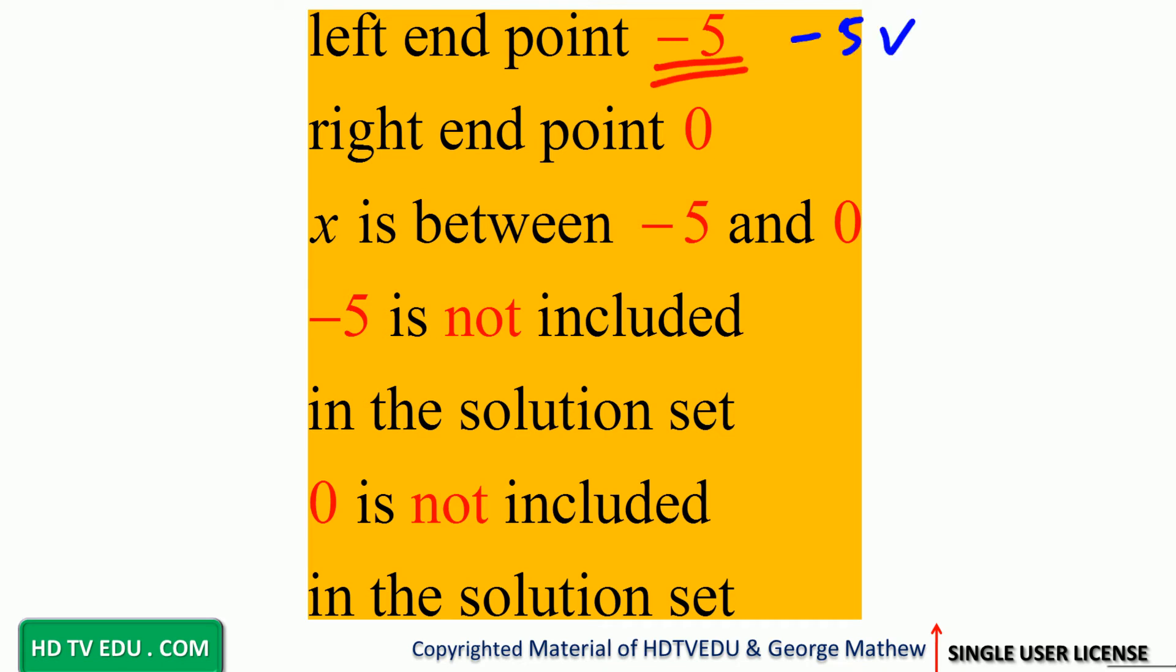The left endpoint is negative 5 and the right endpoint is 0. So we have the number line here with our origin, and then we have negative 1, negative 2, negative 3, negative 4, negative 5. We have parenthesis at the origin and parenthesis at negative 5.